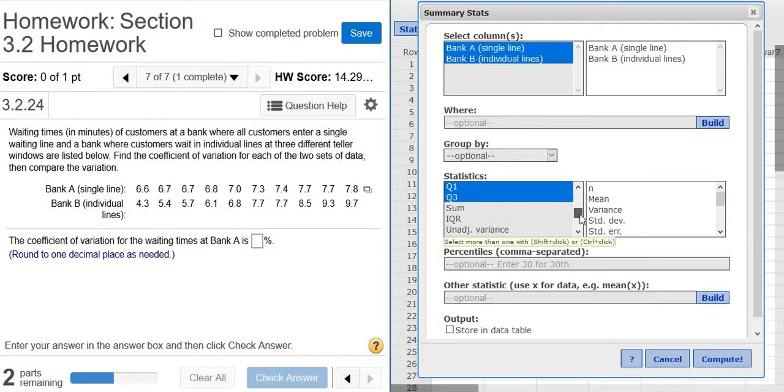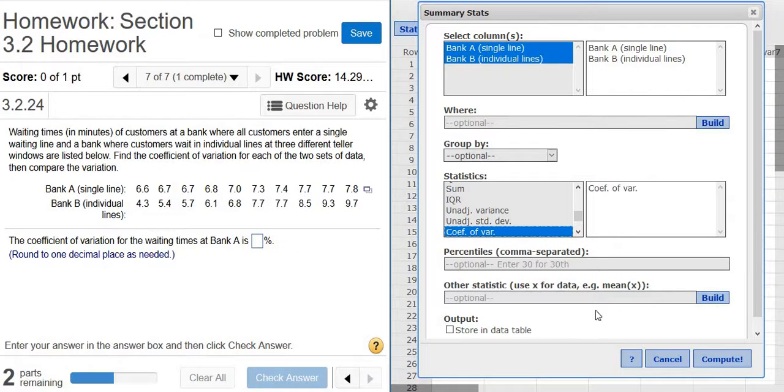Then you scroll down and look for the coefficient of variation. There it is right there, coef of var. Left-click, then go down to the bottom right and click Compute.